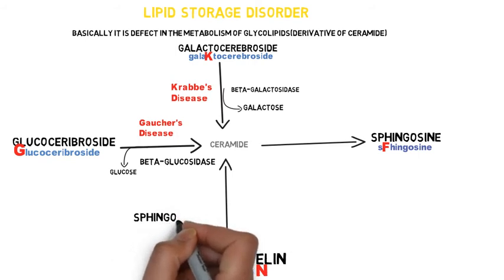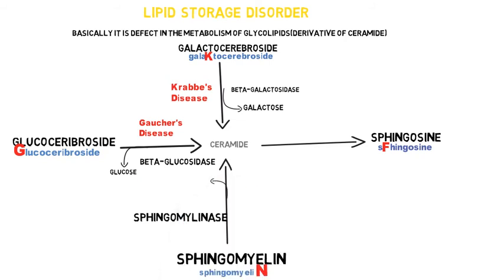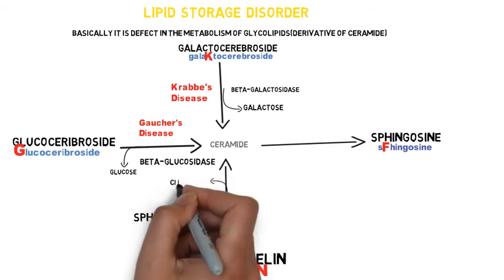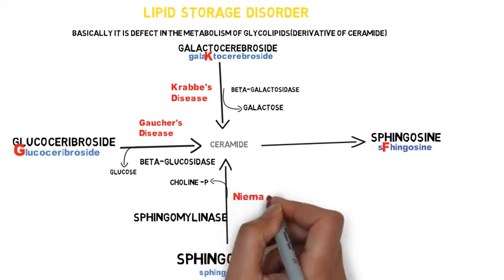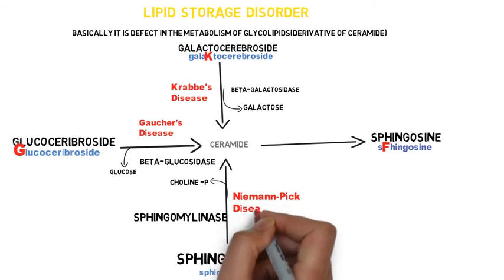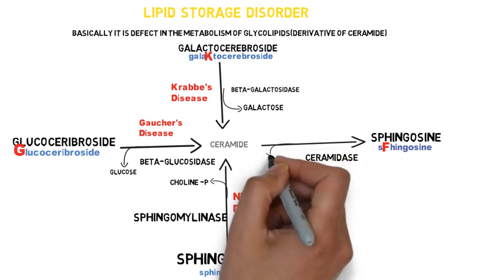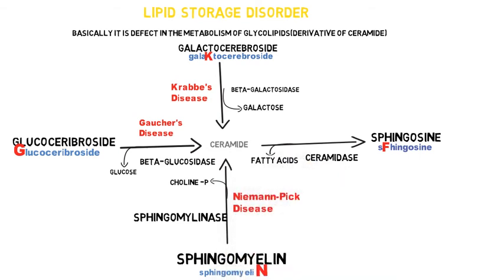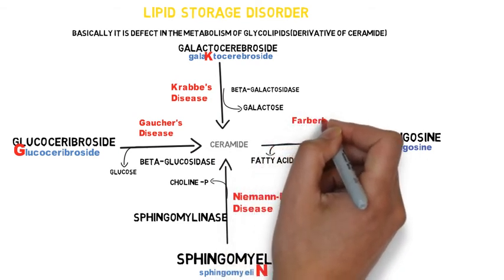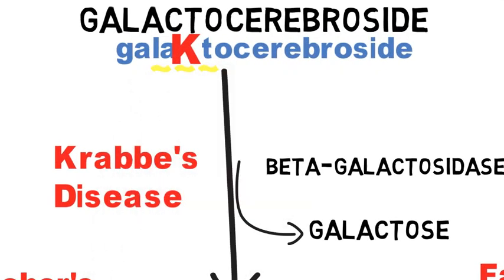Then we have sphingomyelinase, which removes choline-phosphate from sphingomyelin and converts it into ceramide. Any defect in this enzyme will lead to Niemann-Pick disease. Then we have ceramidase, which converts ceramide into sphingosine by removing fatty acids from ceramide. Any defect in the ceramidase enzyme will lead to Farber's disease.